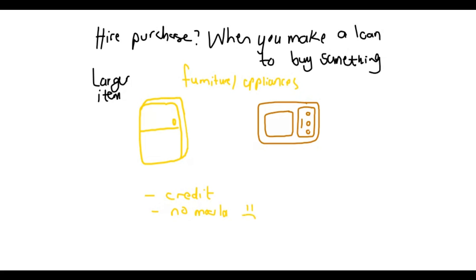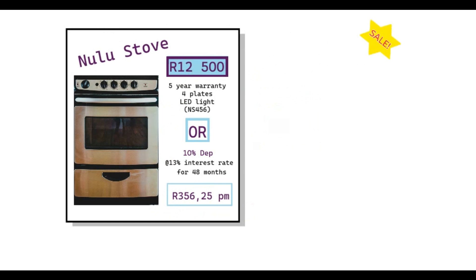Now let's look at an example. I have here a typical advertisement that you would see in magazines. This is the new stove, and we start off with the cash price, that's twelve thousand five hundred rand — in this video I'm just going to say CP for cash price. We also read that it has a five-year warranty; this is just extra information, and the model number is there.